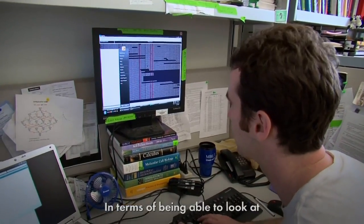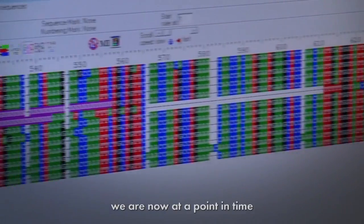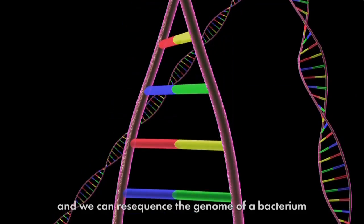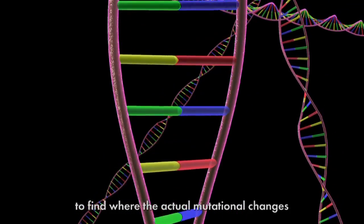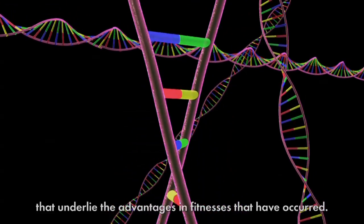In terms of being able to look at the actual outcome of evolution, we're now at a point in time where we can actually use sequencing and we can re-sequence the genome of a bacteria to find where the actual mutational changes that underlie the advantages and fitnesses that have occurred.